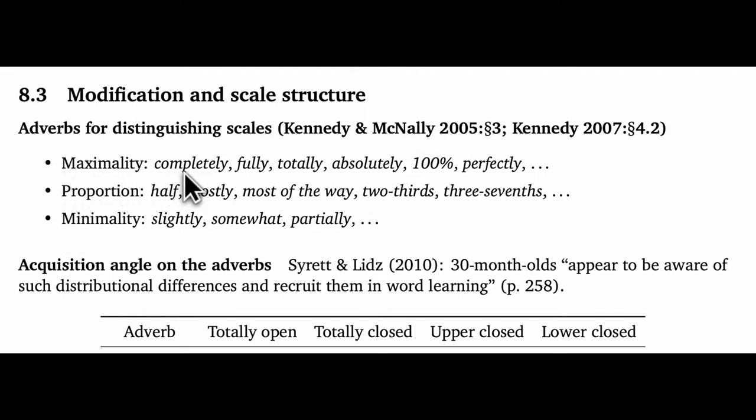Maximality adverbs are like completely, fully, totally, absolutely, 100%, and perfectly. Proportion adverbs are things like half, mostly, most of the way, two-thirds, three-sevenths, and so forth. And finally, the minimality adverbs are things like slightly, somewhat, and partially.